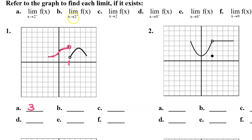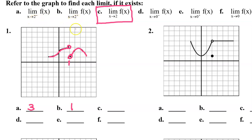How about the limit as x approaches 2 from the right? As we approach an x value of 2 from the right we get closer and closer to a y value of 1. Now how about the overall limit as x approaches 2? For this limit to exist, the limit from the left must equal the limit from the right. Because the limit from the left is different from the limit from the right, the overall limit does not exist.